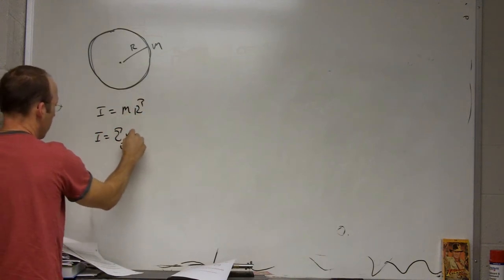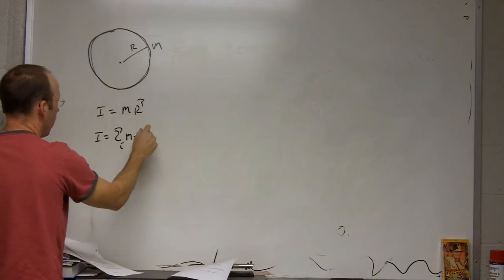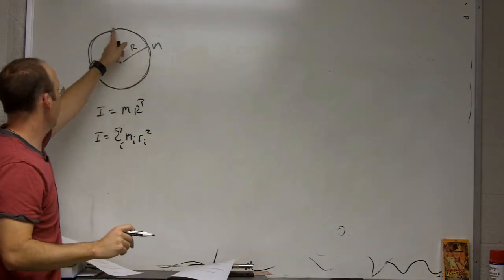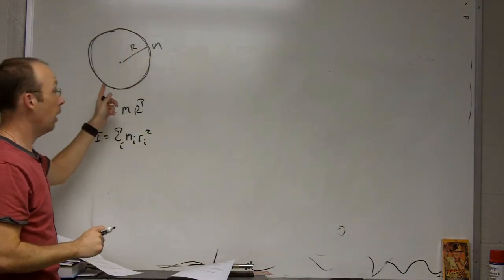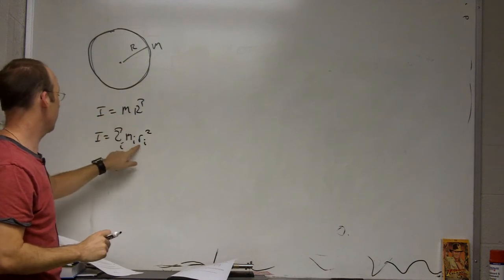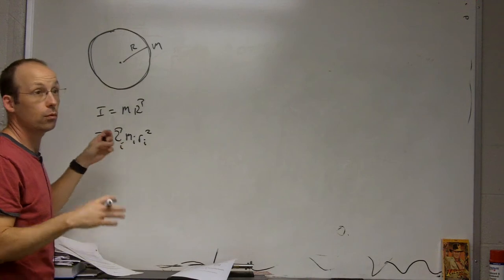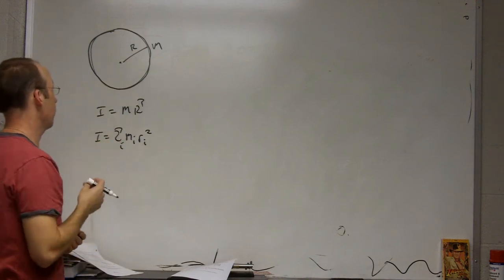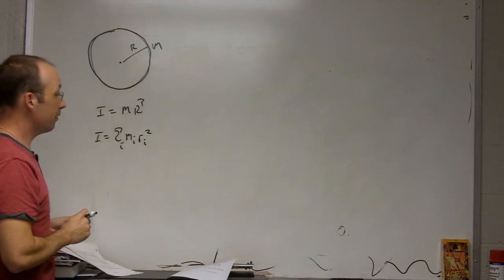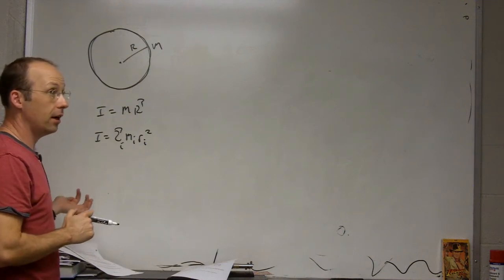But in this case, if you break this into a whole bunch of little pieces, all those pieces are the same distance away r, so that comes out and you get the sum of all the pieces which is just m. So this is mr squared.